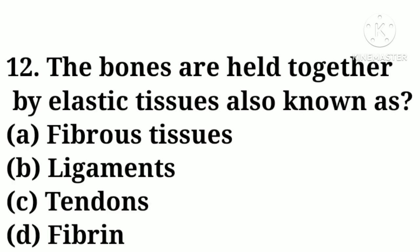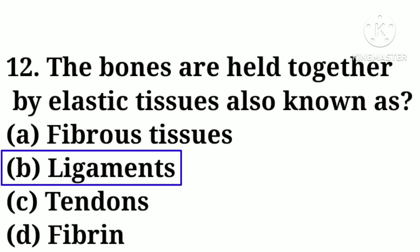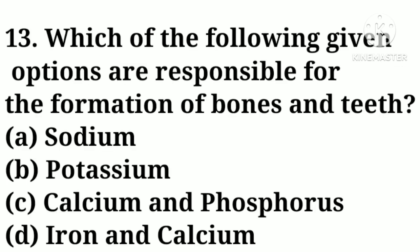Question number twelve: bones are held together by elastic tissues, also known as — option A: fibrous tissues, option B: ligaments, option C: tendons, option D: fibrin. Correct answer: option B, ligaments. Question number thirteen: which of the following options are responsible for the formation of bones and teeth — option A: sodium, option B: potassium, option C: calcium and phosphorus, option D: iron and calcium. Correct answer: option C, calcium and phosphorus.